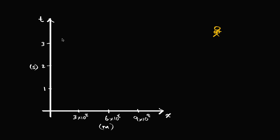What I've drawn here are some axes so that I can plot the path of things as time progresses in my frame of reference. One thing that many of you might have noticed is that I have plotted time in seconds on the vertical axis and our x position in meters on the horizontal axis. And that might be a little bit counterintuitive for a lot of you, especially with math backgrounds.